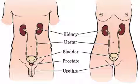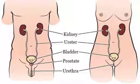In the human body, urine is formed in the kidneys. Urine flows from the kidneys to the bladder via two tubes called ureters.